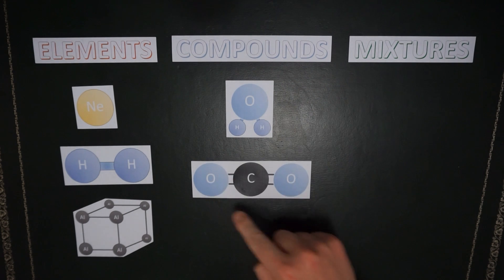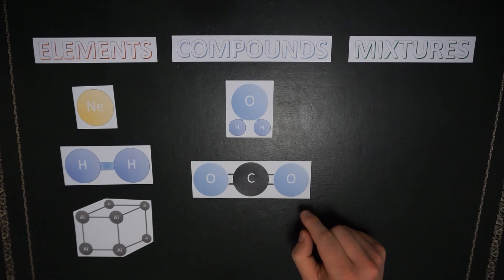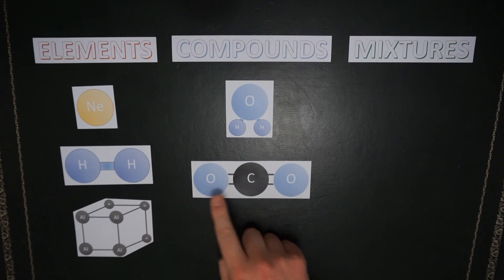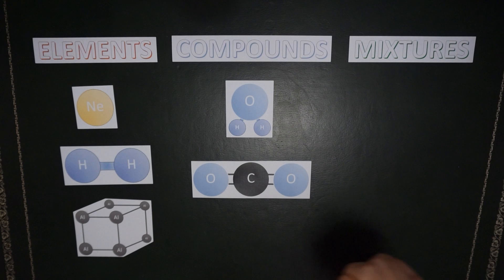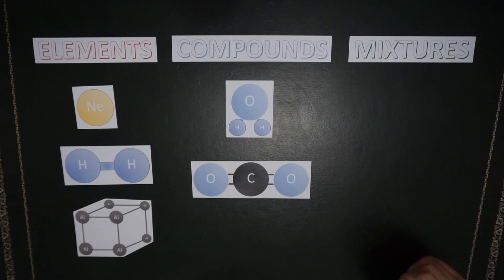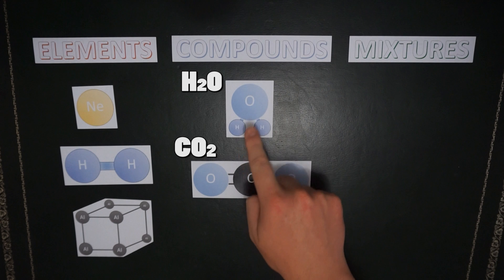Carbon dioxide is another example of a molecular compound because it forms molecules that contain two oxygen atoms bonded to every one carbon atom. And this is how we get the names carbon dioxide and H2O.